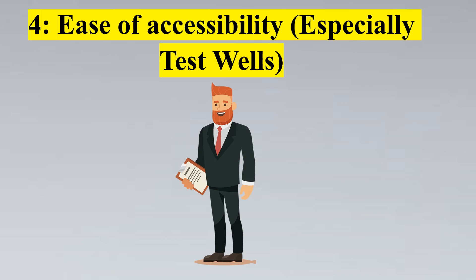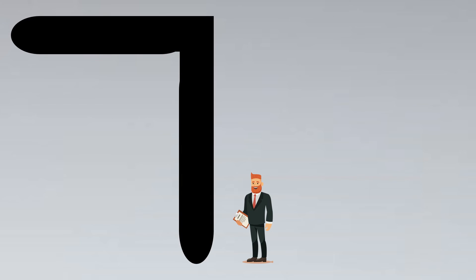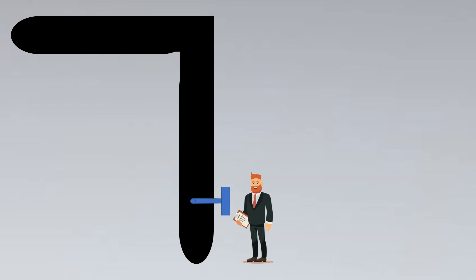Now we look into the final criteria which is the ease of accessibility. This is especially true for test wells because test wells are where people have to consistently go there and check for the temperature at regular intervals. Now imagine that you are in the plant and you are looking for getting the temperature reading. This is your piping system and here is your thermowell attached. So you go to the test well, you put your thermometer and insert it into the thermowell or measure the temperature or you just have to measure the temperature which is shown on the indicator. Now this seems to be easy.